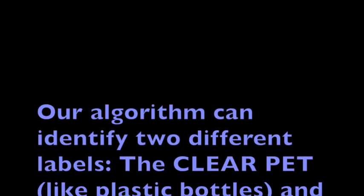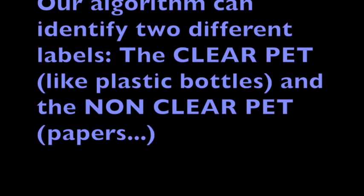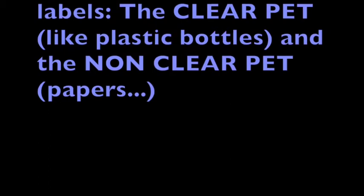Finally, and after a few tests, we noticed that our algorithm can on one hand identify clearly the clear PET, like plastic bottles, and on the other hand make the distinction between each category like plastic bottle, cardboard, or even paper.